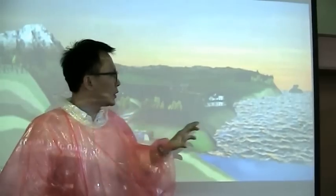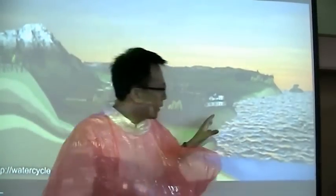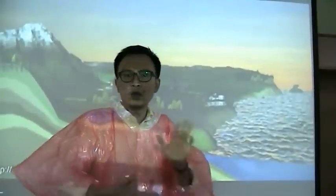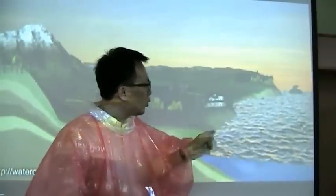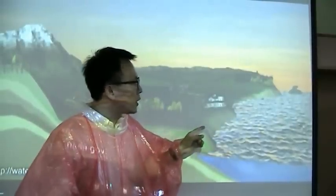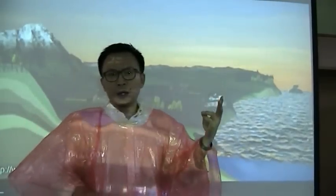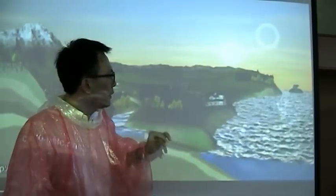Before we go into water cycles, I want you to look at this diagram. This shows the water bodies — the water bodies are the seas, the reservoirs, and the rivers. In the water cycle, there are two processes that you need to remember.